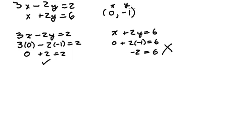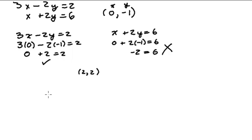What this also tells us is that the point (0, negative 1) lies on the first line if we were to graph it, but it's not on the second line. Now let's check whether the point (2, 2) is a solution to this system of linear equations.